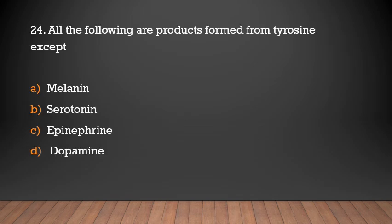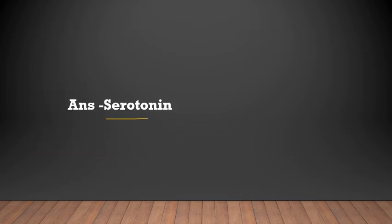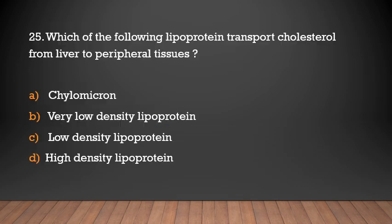All the following are products formed from tyrosine except: melanin, serotonin, epinephrine, dopamine. Answer: Serotonin — serotonin is not derived from tyrosine.